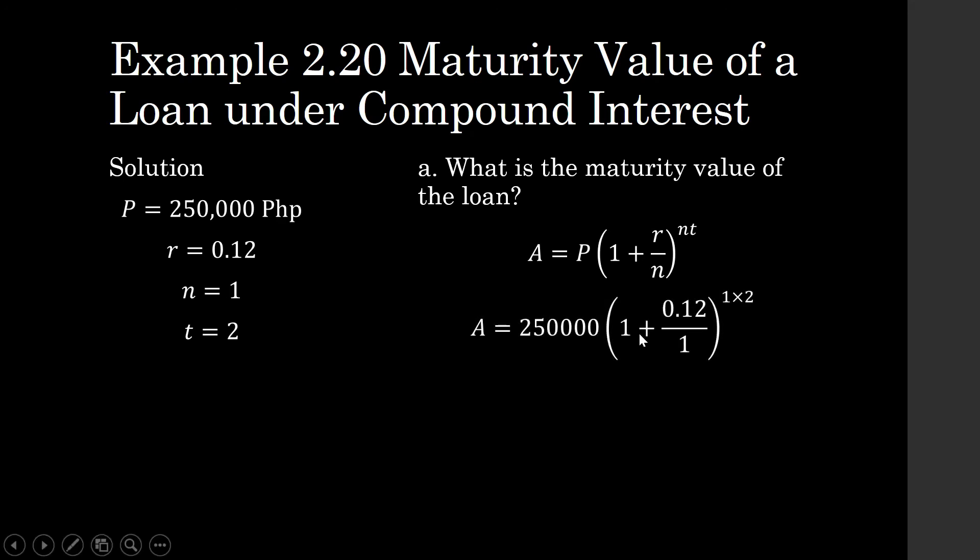So, our accumulated value or the maturity value of the loan is equal to 313,600 pesos. This is the maturity value of the loan after two years. So, all in all, what is the interest paid to this loan?